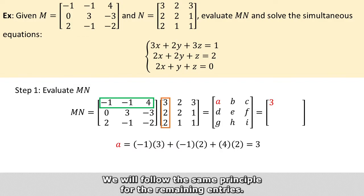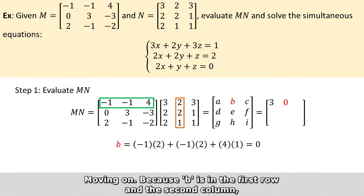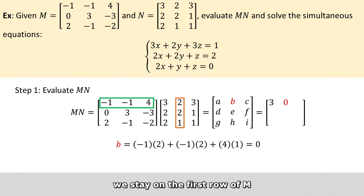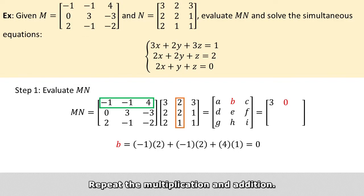We will follow the same principle for the remaining entries. Now moving on, because B is in the first row and the second column, we stay on the first row of M but shift to the second column of N. Then we repeat the multiplication and addition. This gives us 0 for B.